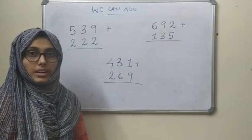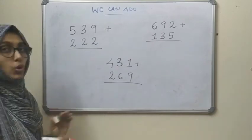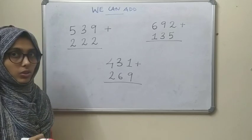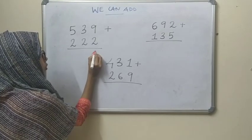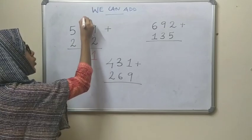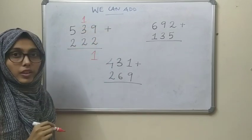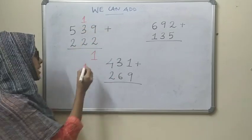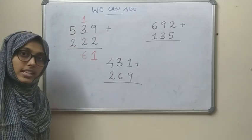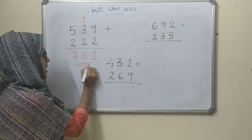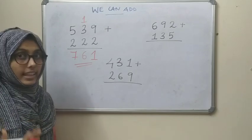Now my dear students, I am going to show you 3 types of addition — you know this but I am going to revise. First: 9 plus 2 is 11, write 1 here and carry 1. Then 3 plus 1 is 4, 4 plus 2 is 6, write 6, and 5 plus 2 is 7. So the answer is 761. This is the first type of adding we studied.